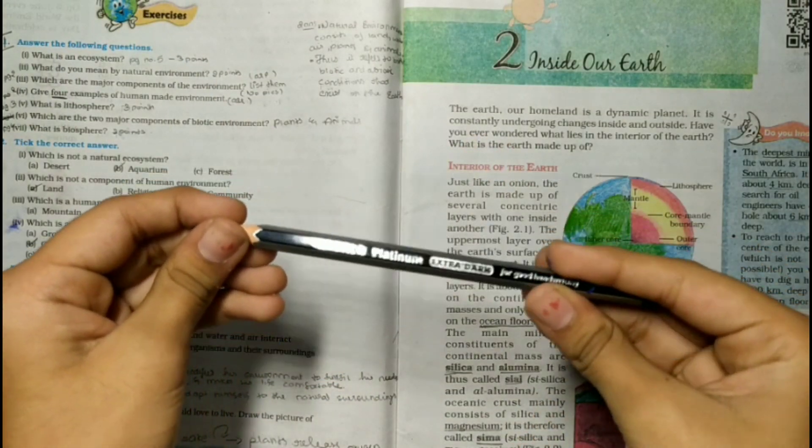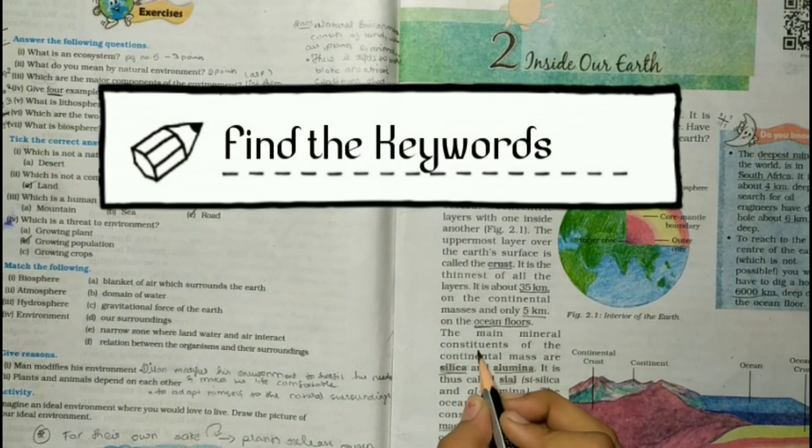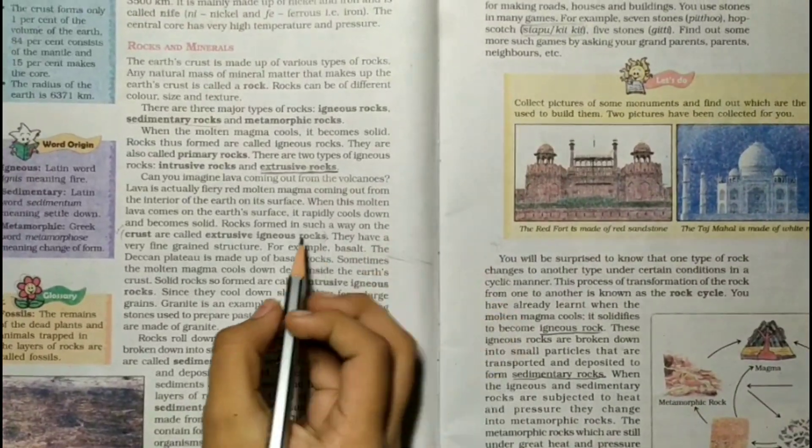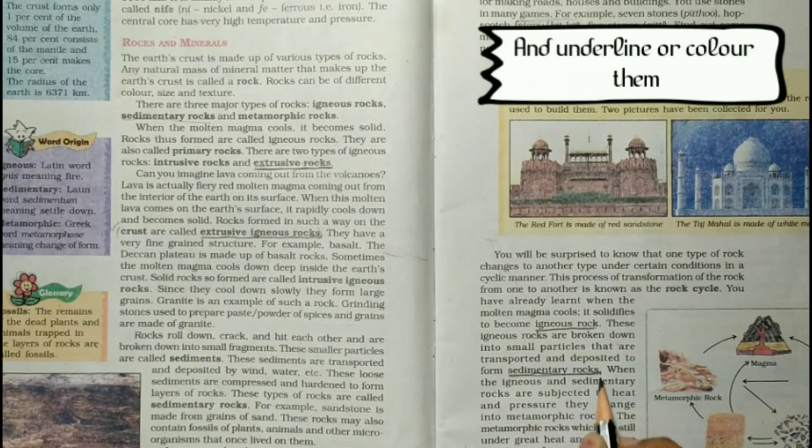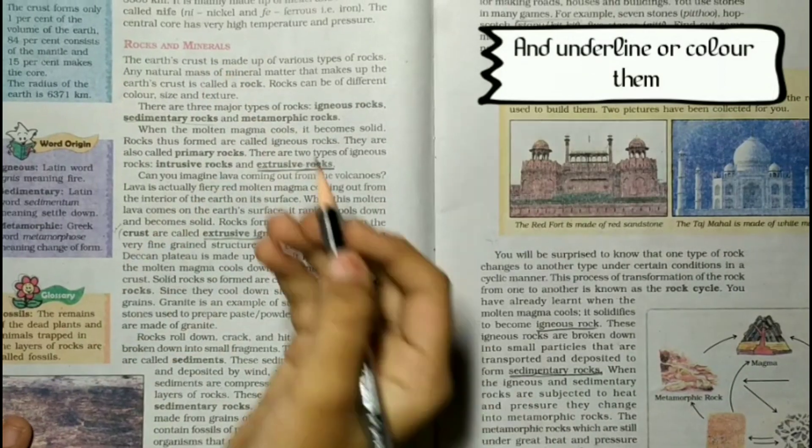Tip number two: find the keywords. Keywords are short and they are the main words in the sentence. Read the small paragraphs, underline the keywords and try to understand the meaning of them.